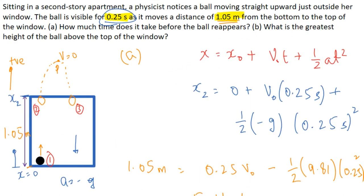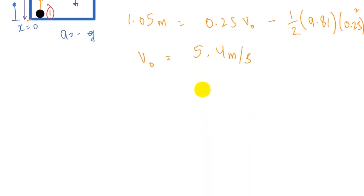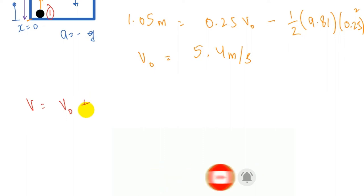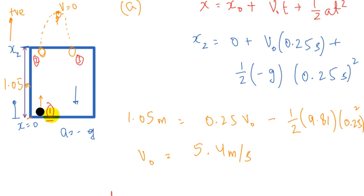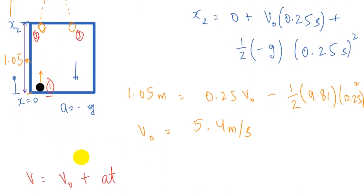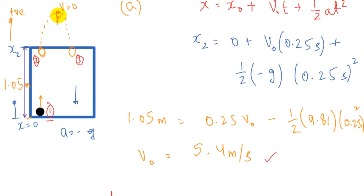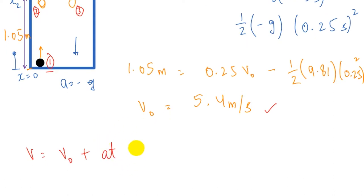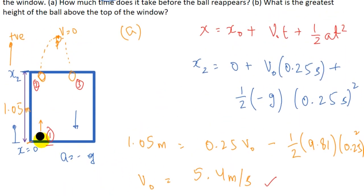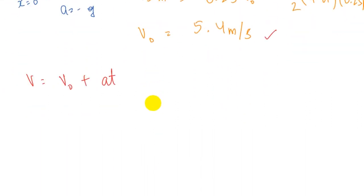Now we calculate the time the ball takes to move from position one to the peak value. We use the equation v = v₀ + at, applying it between point 1 and the peak point. At the peak, the final velocity is zero. We already know the initial velocity and acceleration, so we can solve for the time.